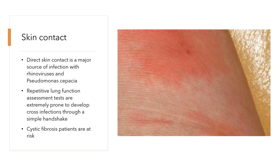Skin contact can be quite innocent — someone walks in and shakes your hand, and that is a source of transmission. Direct skin contact is a source of rhinoviruses and Pseudomonas. Repetitive lung function tests are extremely prone to cross-infection due to contact. Some people have an infection and come in for serial pulmonary function tests, and the likelihood of transferring the organism to you is high. Cystic fibrosis patients are particularly prone to skin contact infections and transmission to other parties.